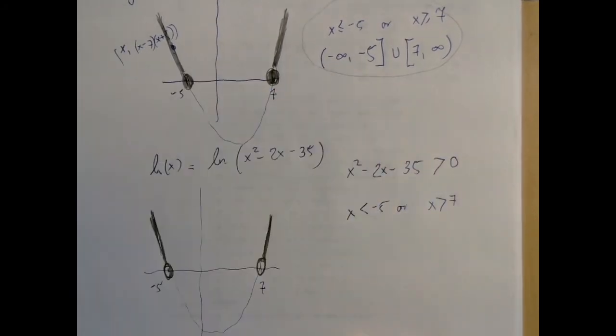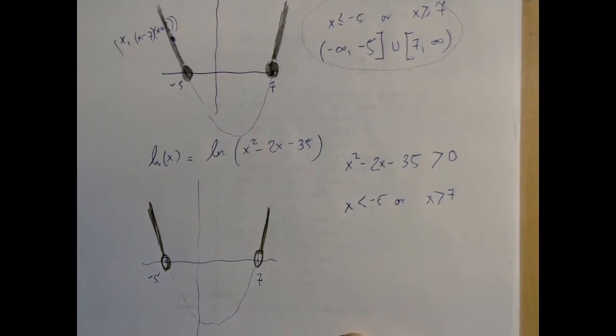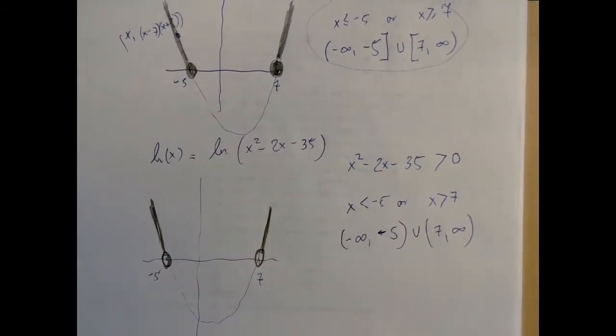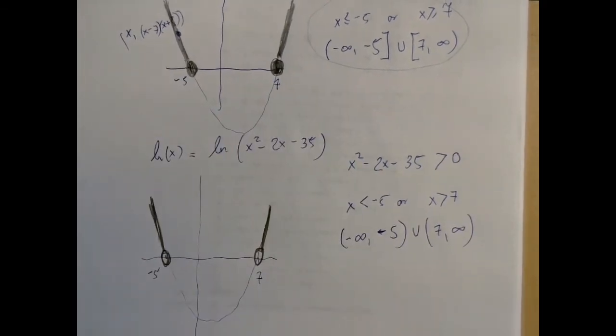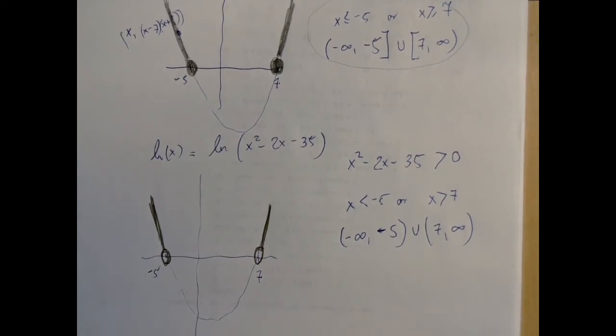So now the solution set of this inequality, which is the same as the domain is x is either strictly less than negative 5 or x is strictly greater than 7. And the same solution set in interval notation is the union of two open intervals from negative infinity to negative 5 and from 7 to infinity.